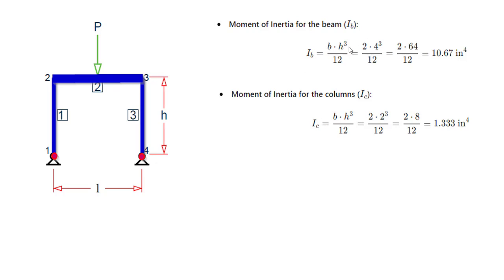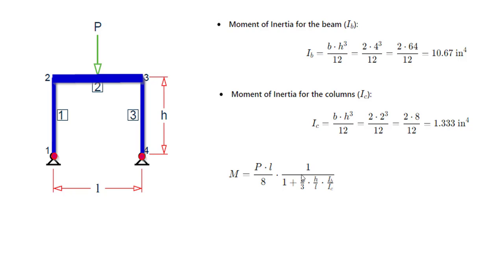It's pretty simple — Bd³ by 12 is the equation for calculating the moment of inertia. I have provided the calculations in step-by-step format. Once you derive the moment of inertia, we need to put all these values into the given equation based on WL by 8, where W is your load value P. We will calculate WL by 8 first and then proceed with the next term.